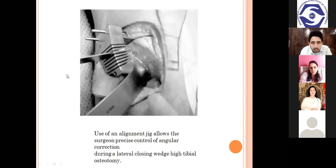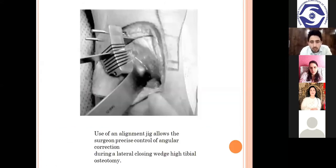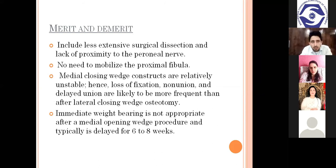Here is a patient with an external fixator showing pre-op varus deformity, and post-operatively both mechanical and anatomical axes have been corrected effectively. An alignment jig allows the surgeon precise control of angular correction after surgery. Medial opening wedge osteotomy is used to treat medial compartment osteoarthritis; fixation is achieved by either a medial distraction plate or an external fixator. It is technically easier for the surgeon to achieve precise angular correction than with lateral closing wedge. Merits include less extensive surgical dissection and no need to mobilize the proximal fibula.